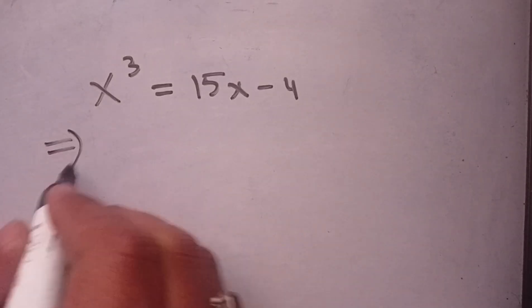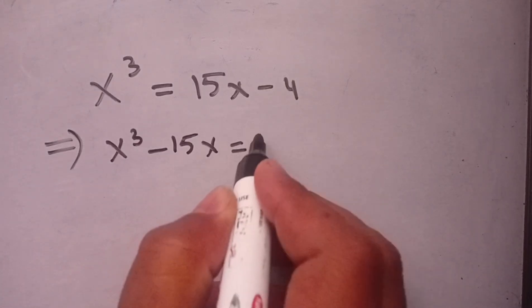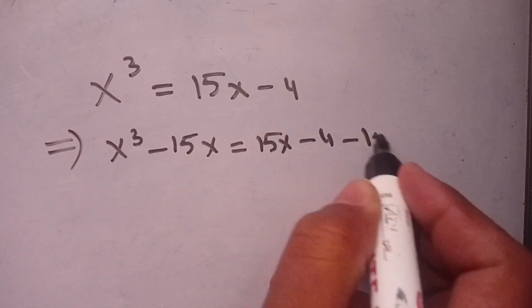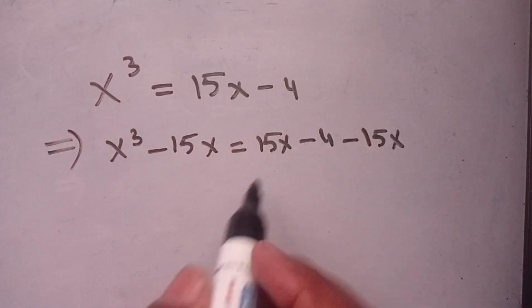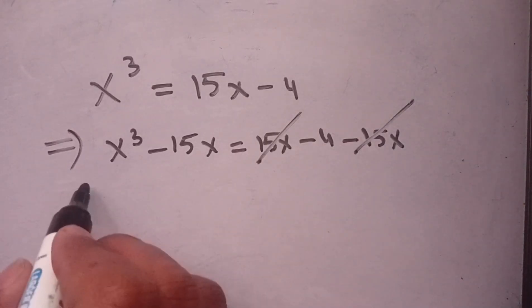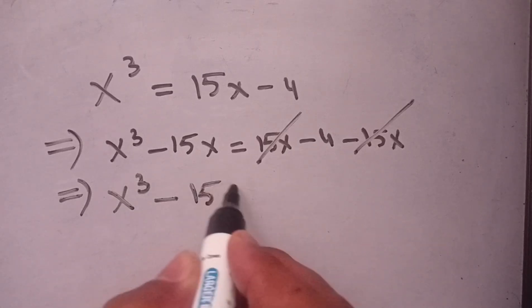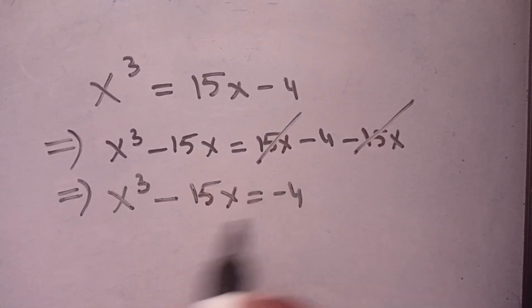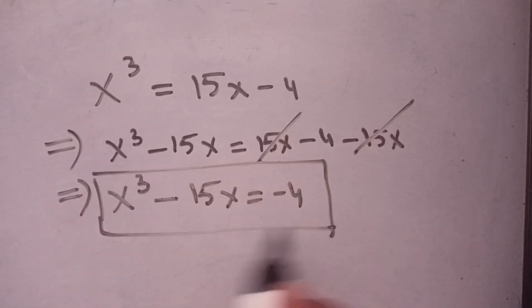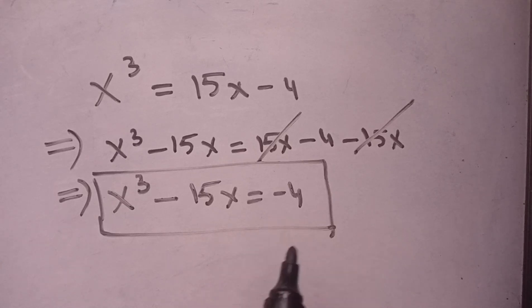Now we can write it as x cubed minus 15x equals 15x minus 4 minus 15x. We cancel the 15x on the right-hand side, which implies x cubed minus 15x equals minus 4. That is the required value.